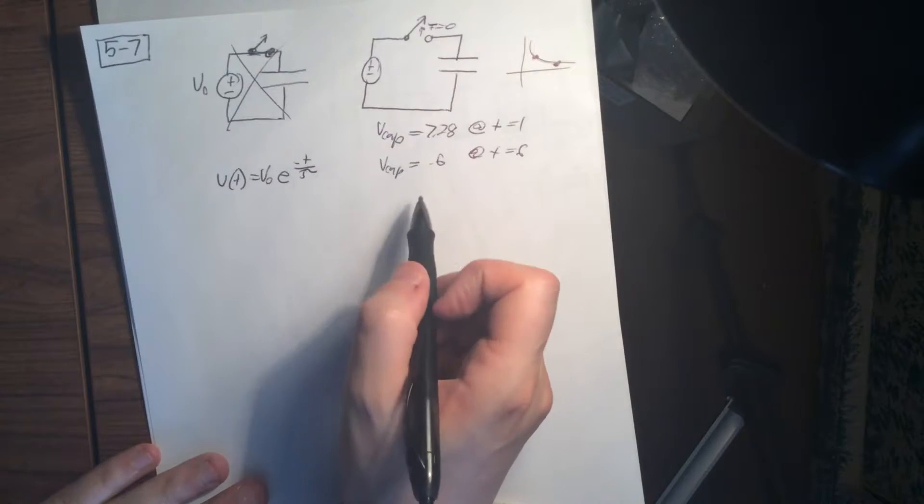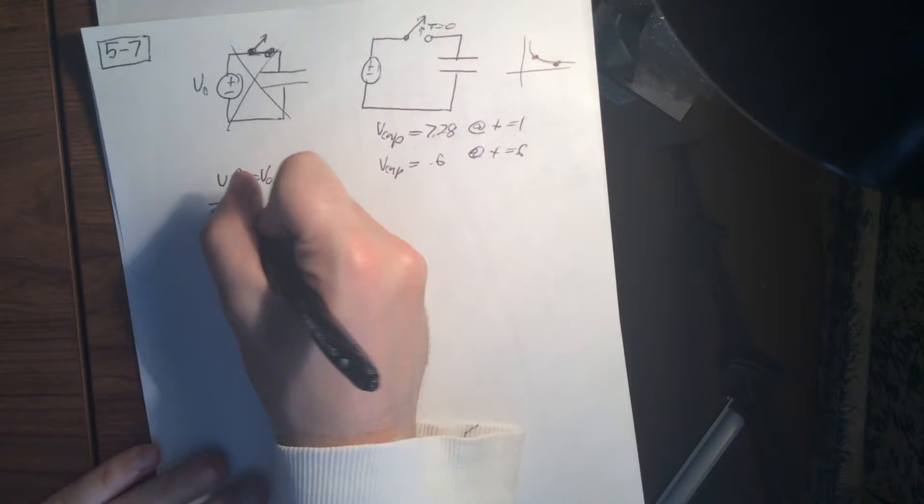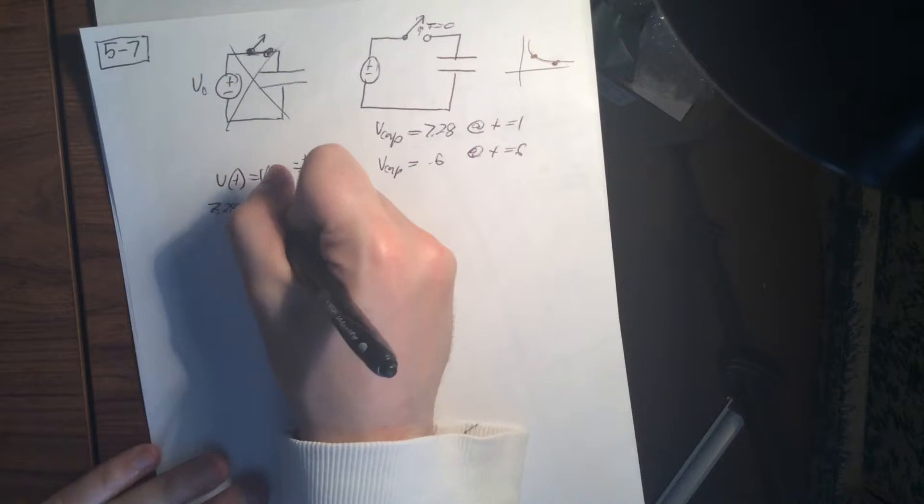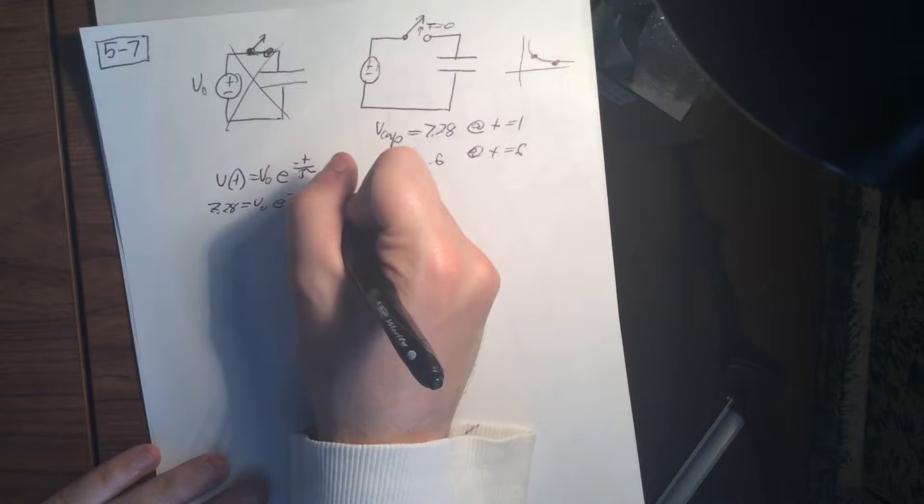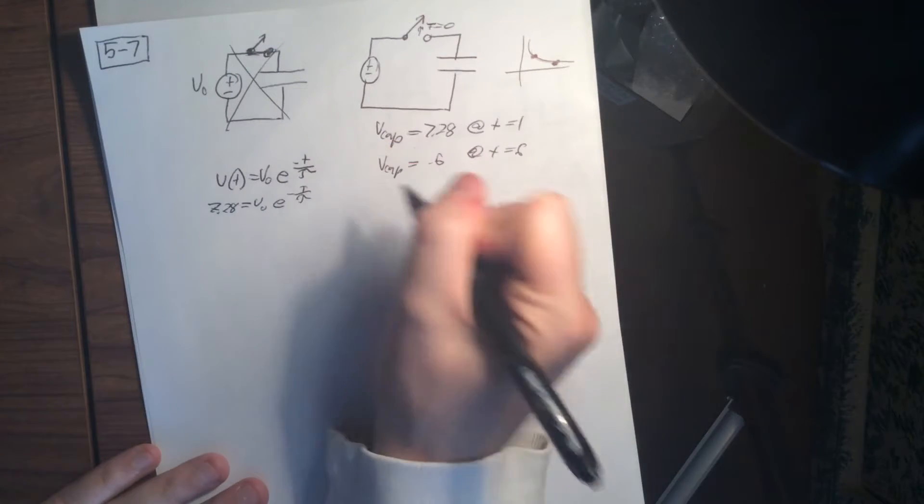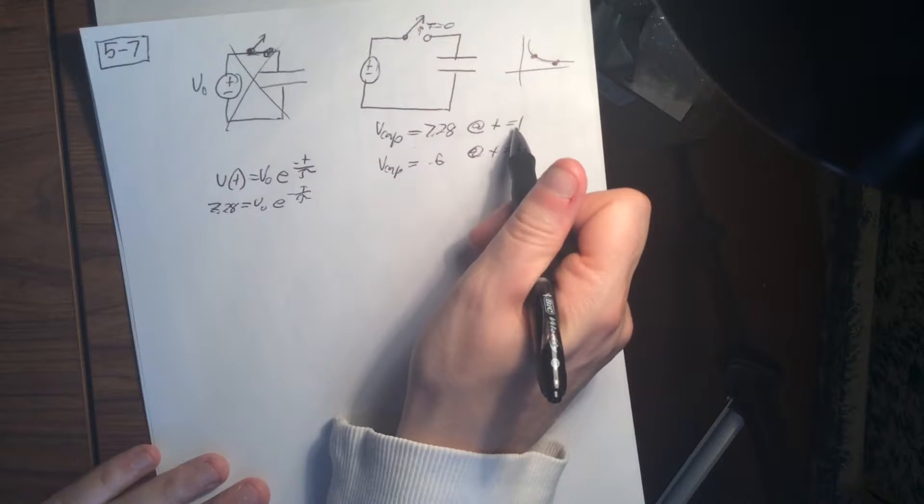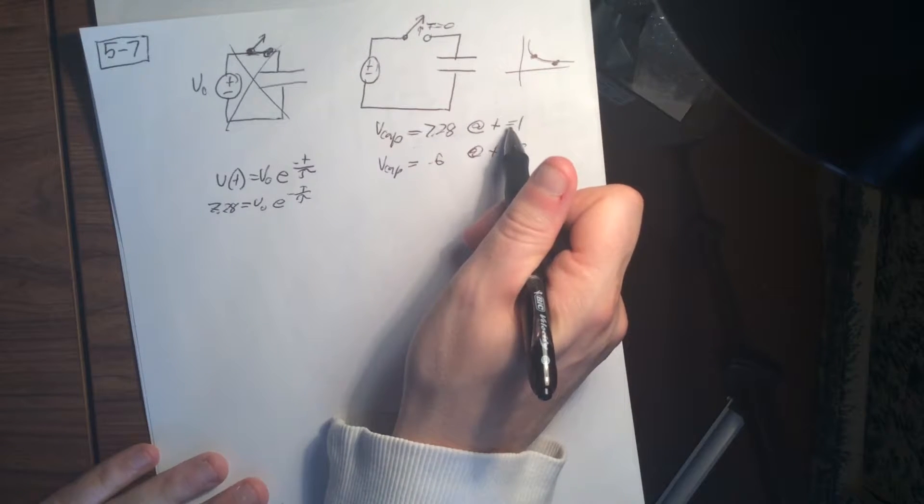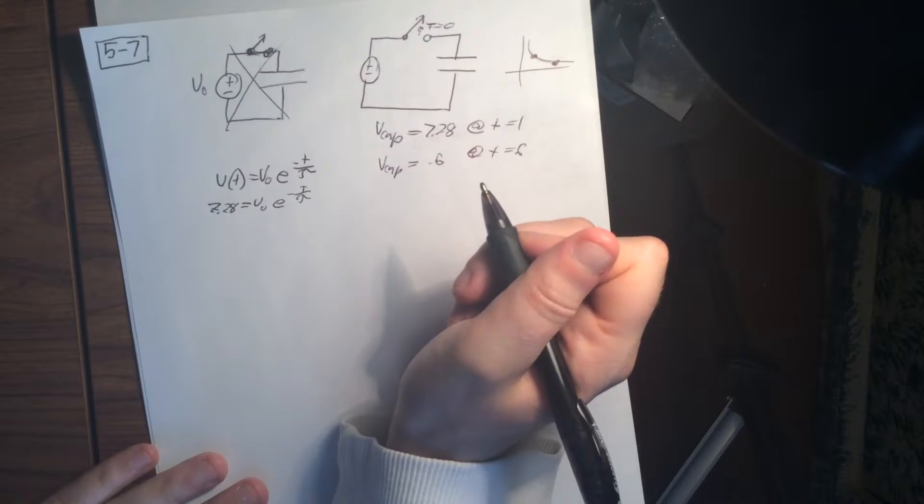So we plug in our variables to this. So let's just do 7.28 equals V0 times e to the minus 1 over tau, minus T over tau. And that's going to be at T equals 1. So we're going to get T, so that's going to be minus 6 over tau.